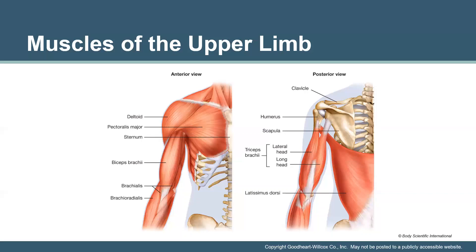From the anterior view, we see the deltoid muscle, pectoralis, biceps brachii, brachialis, and brachioradialis. From the posterior view, we see the triceps — named because it has three heads — whereas the biceps brachii has two heads coming together in the same muscle belly or attachment point. We also notice the latissimus dorsi, which originates on the lower sixth thoracic and lumbar vertebrae, ribs 10 through 12, the sacrum, and the iliac crest. Since the insertion point is what gets moved, a muscle crossing over body parts like this has its primary role in moving the arm.